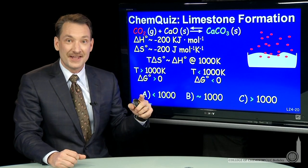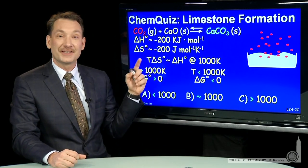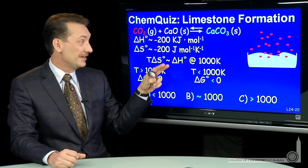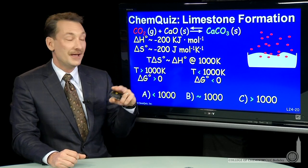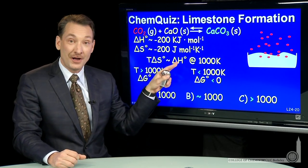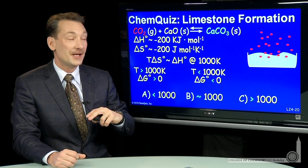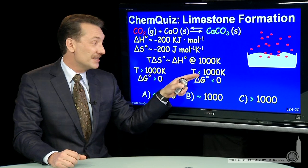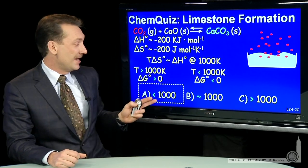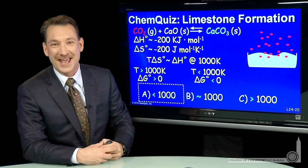For temperatures less than 1,000, then the T delta S term is less in magnitude than the delta H term. So this positive contribution is smaller than this negative contribution. So overall, delta G is negative. So this reaction is spontaneous for temperatures less than 1,000 degrees. The correct answer here is A.